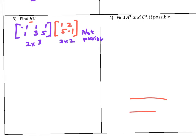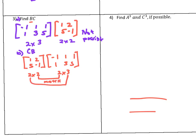What if I said, part B, find CB—is that possible? The answer is yes, because I have a 2×2 multiplied by a 2×3. These two have to match, then they cancel off, and we're left with dimensions 2×3.